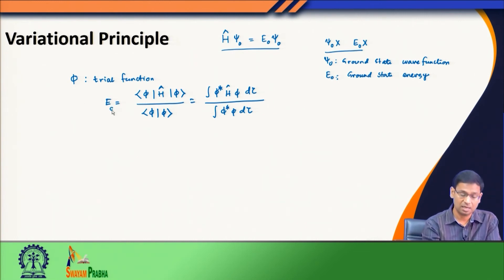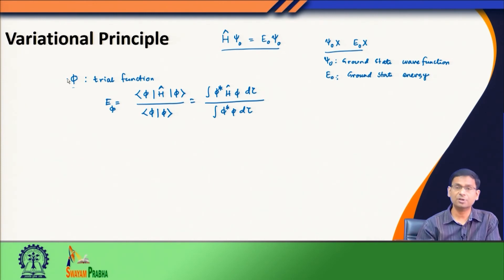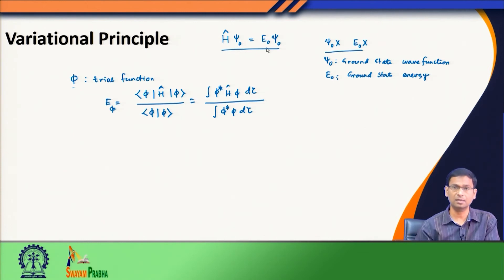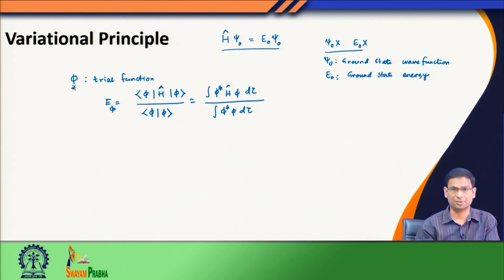This is the energy E_φ coming out when I consider a trial function φ. I know this is perhaps not the exact solution. For example, what kind of φ would I take? I will look at the system in hand and then make an intelligent guess — perhaps breaking down the system into smaller parts — and decide what kind of trial function will be sufficient. I will come back to a few examples where I will show how we can take this trial function.